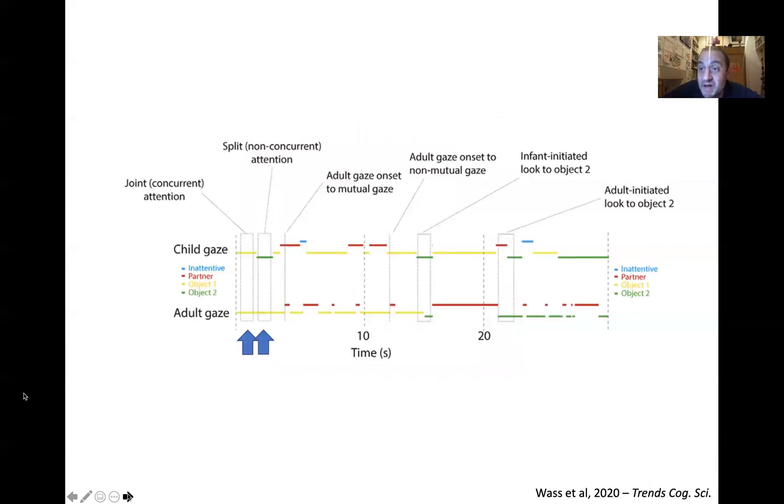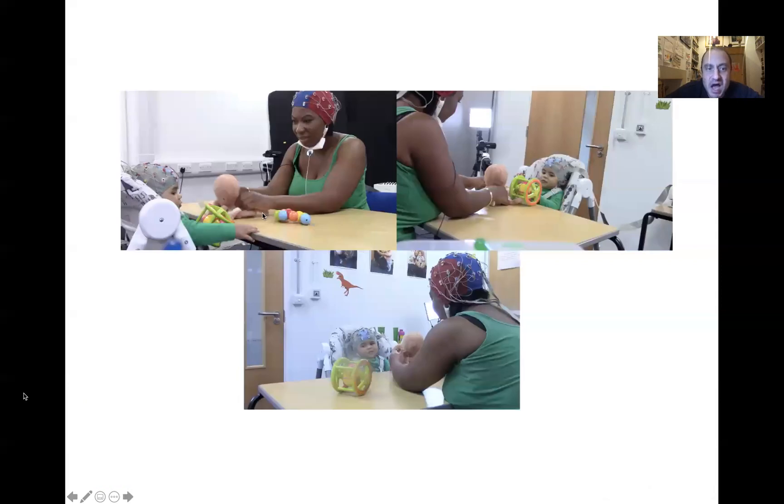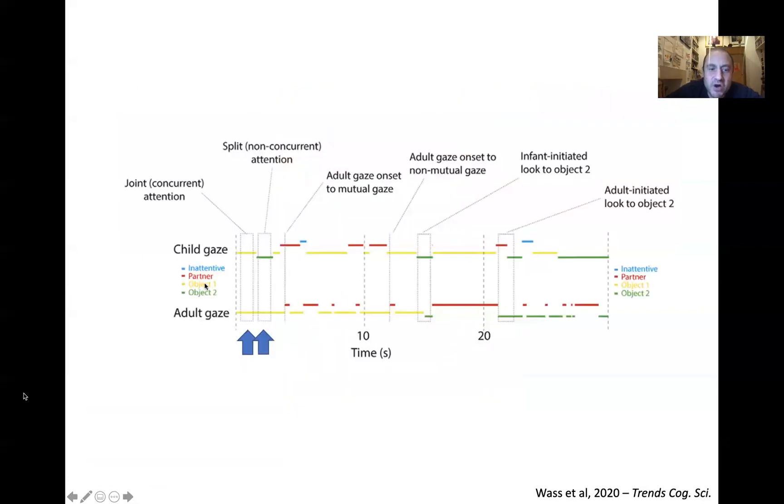This is a problem with all EEG studies, by the way. Whenever I'm reviewing a paper and they say they've got rid of the artifact from their data, I always say no, you haven't. We know we can't clean data completely. But this is a real problem for us. So we've got to be clever in how we analyze the data. This is 30 seconds of a tabletop interaction where we've got a series of different objects on the table, and we're coding what the baby's looking at and what the mum's looking at. The blue are segments where the baby is inattentive, red is when they look to their partner, yellow is object one, and green is object two. First, we can look at all the times when the baby and mum are paying attention to the same thing and compare them to times when they're paying attention to different things. And we can say separately, are there differences in the amount of movement between the two conditions that might get in the way of that comparison.